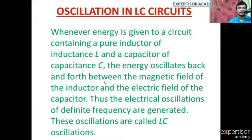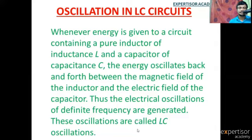We can see the energy transfer from electric field to magnetic field and from magnetic field back to energy. This back-and-forth motion causes oscillations in the inductor, and thus electrical oscillations of definite frequency are generated. These oscillations are called LC oscillations.